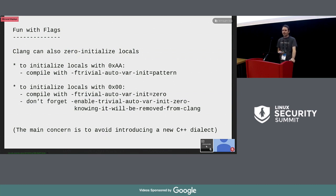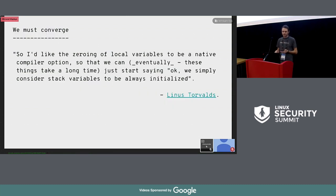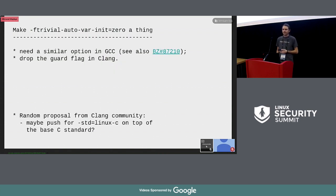Clang can also zero-initialize locals, but this mode is protected by a really lengthy flag because Clang developers don't want to introduce a new C++ dialect. Our goal is to converge to a situation where all supported compilers can zero-initialize all locals on the stack. To do so, we must introduce a similar option to GCC — any GCC contributors here? — and make the Clang community support this zero-initialization option as a first-class citizen.